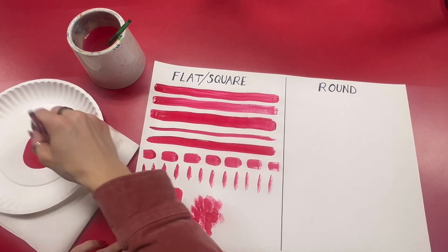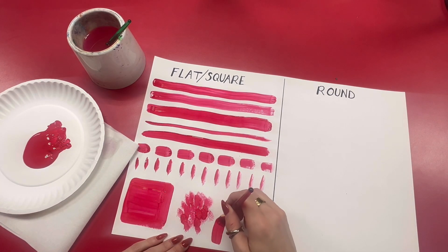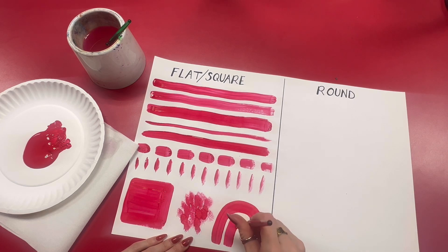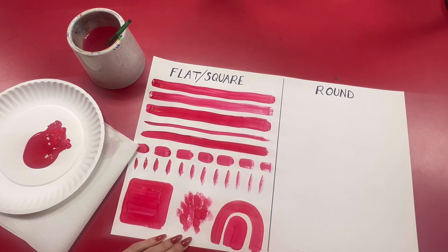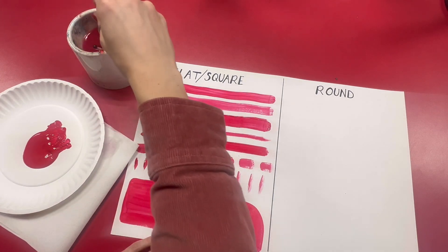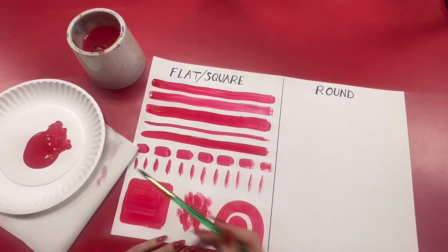I can practice making a rainbow line. Now I'm done practicing with the flat square brush. I'm going to move over to the round brush. Get rid of some of that water.